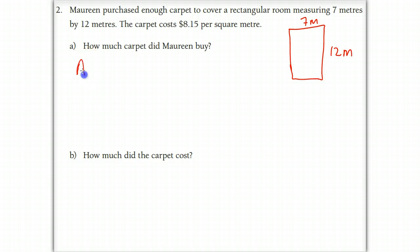Well that's just the area of the room and the area is equal to length times width, so in this case it's 7 times 12 and our answer is 84. And because it's 7 meters times 12 meters, meters times meters is meters squared.